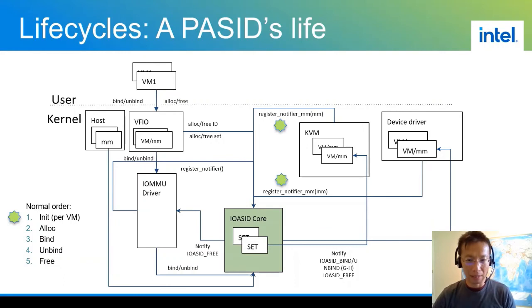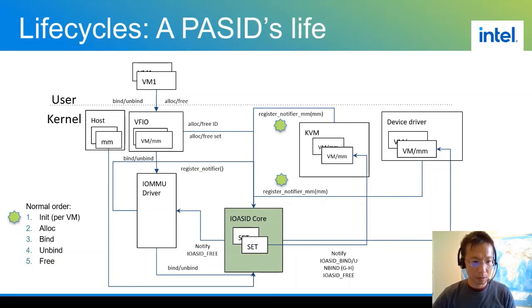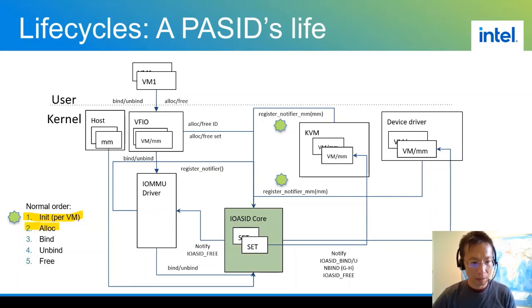Now let's talk about the PASID life cycle. On a typical usage it consists of five steps. The first is initialization, done on a per-VM basis. On a per-PASID basis it has four steps: allocation of the PASID, bind with the page table (guest page table), unbind, and free.